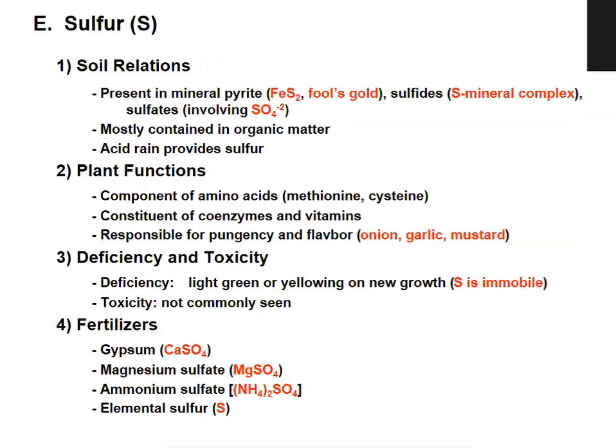In onion, allyl sulfate disulfide is present, which is responsible for pungency. In garlic, allyl disulfide is the responsible compound. Sulfur deficiency shows as light green or yellowing of new growth because sulfur is immobile in the plant.